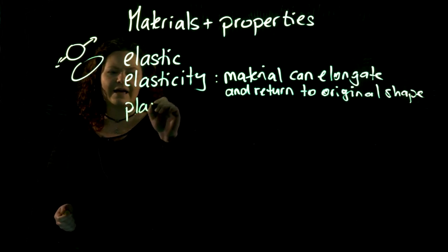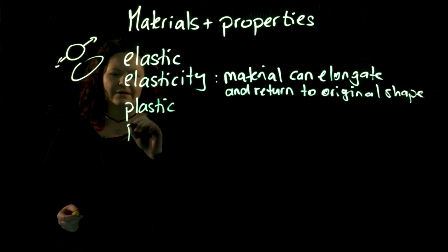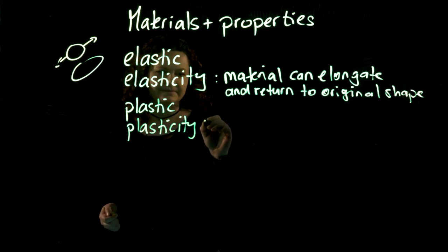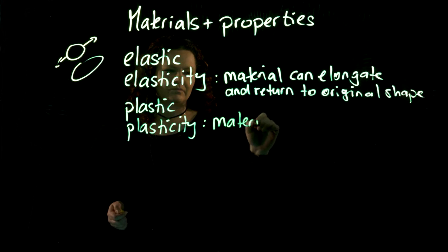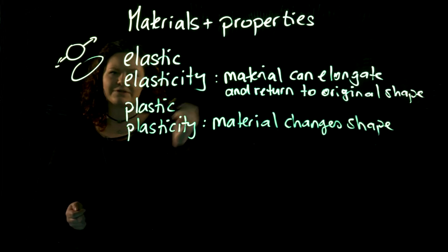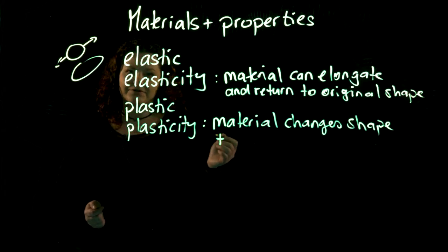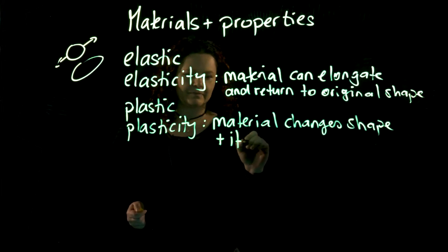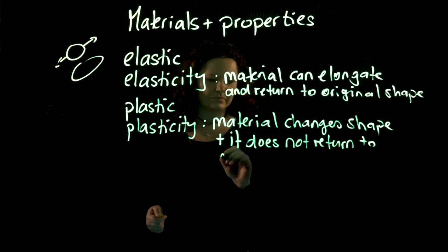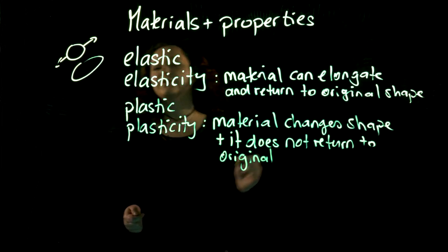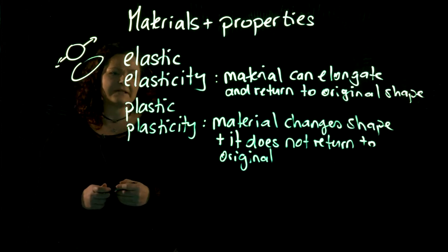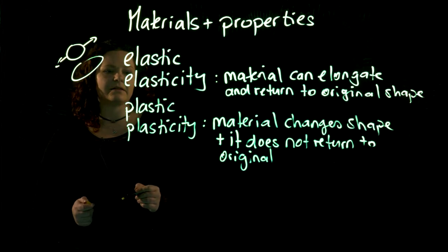In contrast to this, we have the adjective plastic and the noun plasticity. Plasticity means we change the shape of the material, but in contrast to elasticity, it does not return to its original shape. We could also say it is permanently changed in its shape. This is the second important word — the first is elastic and the second word is plastic.